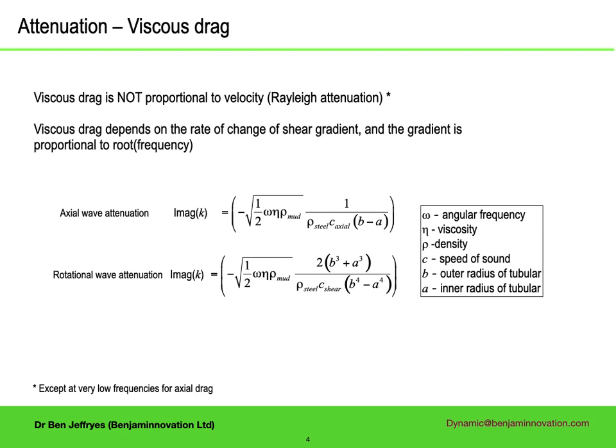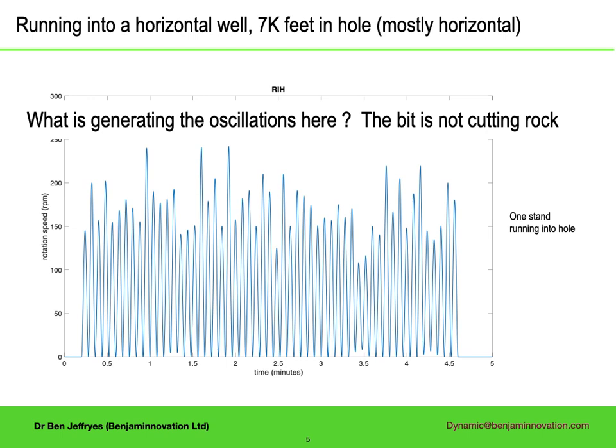However, there is another important phenomenon. We saw high amplitude resonances rotating off bottom in a horizontal well — this is common. It can't be the bit driving the amplification, as the bit isn't cutting. So what is it? There is a lot of circumstantial evidence that it comes from the frictional interaction between the drill string and the borehole wall.